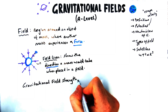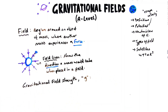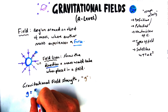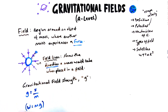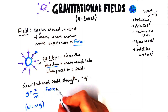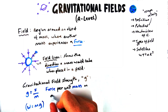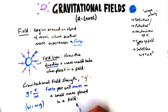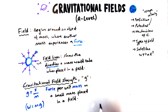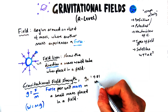The next definition is particular to gravitational fields: gravitational field strength, which we use a lowercase g to define. It's defined by the equation g = F/m, which you might recognize from year 12 — it's the same as weight equals mg, just rearranged. Defined in words, it is force per unit mass acting on a small mass placed in a gravitational field. We should know g for planet Earth equals 9.81 newtons per kilogram.